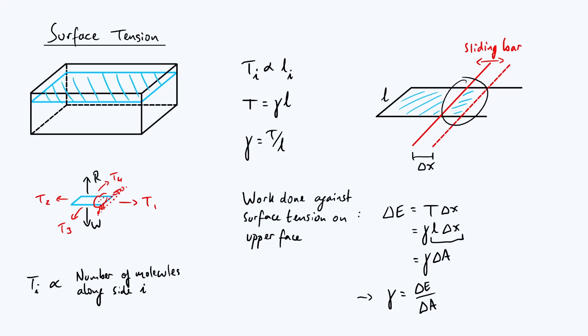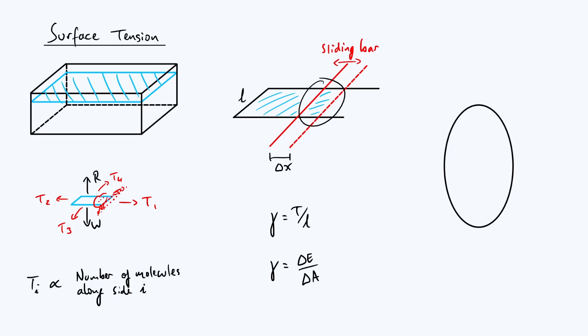It is worth noting that the actual amount of work you would have to do is twice as big as what this equation gives, because you're creating new surface on both the top and the bottom, or equivalently because both faces are pulling with equal forces to the left. That's why I've specified this is the work done against surface tension on the upper face, or equivalently on the lower face, but just one of the faces.